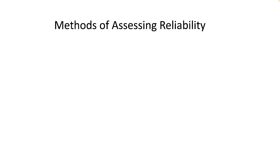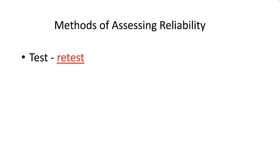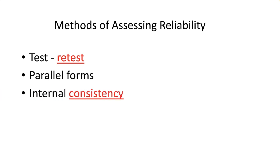There are numerous forms of assessing reliability, but four major types are: test-retest reliability, parallel forms reliability, internal consistency reliability, and inter-rater reliability.